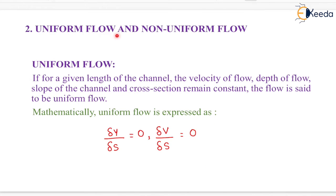Next is uniform flow and non-uniform flow. What do you mean by uniform flow? If for a given length of the channel, the velocity of flow, depth of flow, slope of the channel, and cross section remains constant, the flow is said to be uniform flow. Mathematically, uniform flow is expressed as ∂y/∂s = 0 and ∂v/∂s = 0.